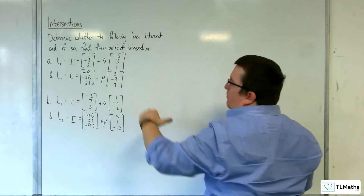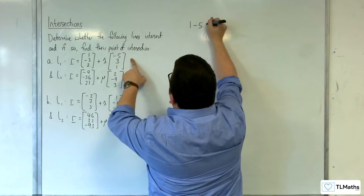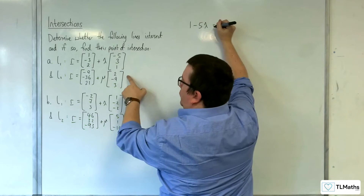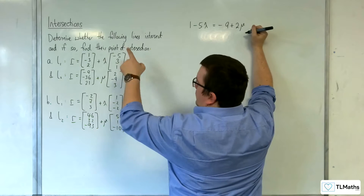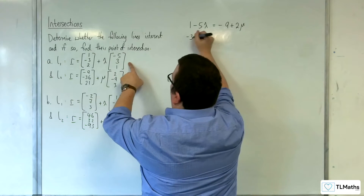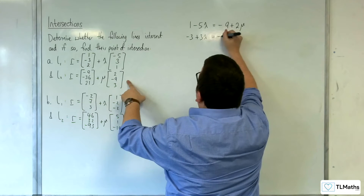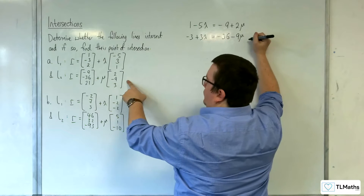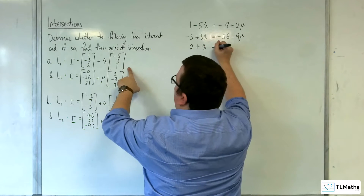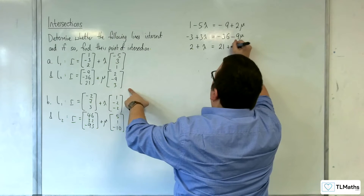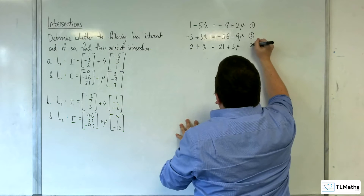We're going to get a top, middle, and bottom row. So the top row will be 1 take away 5λ is equal to minus 9 plus 2μ. Then the middle row, we've got minus 3 plus 3λ is equal to minus 36 take away 9μ. And then the bottom row, we've got 2 plus λ is equal to 21 plus 3μ. So we're going to have equation 1, 2, and 3.